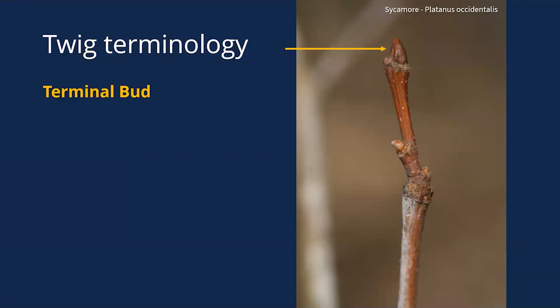The first characteristic to talk about is the terminal bud — it's at the end of the twig, usually covered in scales, and is the growing point for next year's new twig. The terminal bud will open up and a new twig will come out the following year. In general, terminal buds are larger than the other buds on the twigs, so we use those for identification quite a bit.